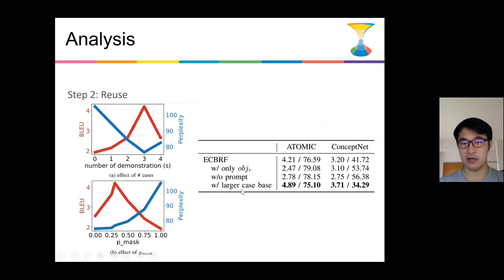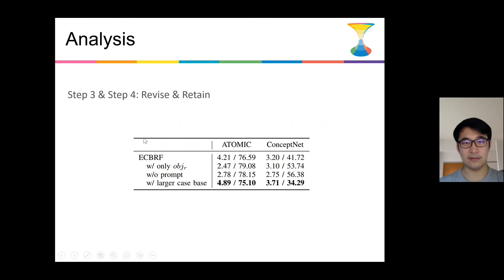And also we show that with larger case space, this result actually corresponds to the revise and retain step. So the results of the revise and retain step are larger case space with more high quality cases. And we simulate this with that during test time, we enlarge the case space. And we show that a larger case space can lead to much better results than ECBRF with a small case space. So in this way, it shows the effectiveness of our revise and retain.